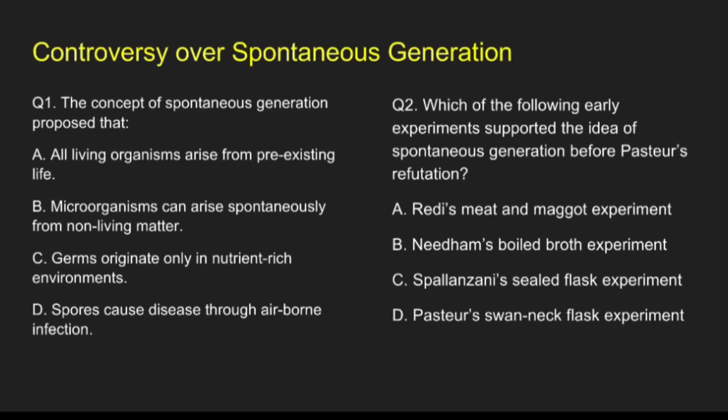The first question: the concept of spontaneous generation proposed that — Option A; Option B, microorganism can arise spontaneously from non-living matter; Option C, germs originate only in nutrient-rich environment; Option D, spores cause disease through airborne infection. The correct answer for question 1 is option B: microorganisms can arise spontaneously from non-living matter. That was spontaneous generation, that is abiogenesis.